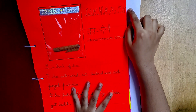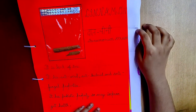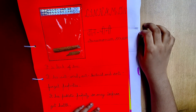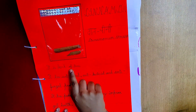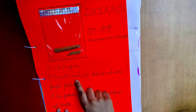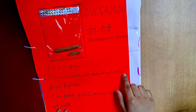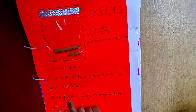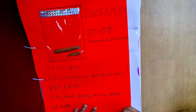First is cinnamon. This is also known as dalcini. Its scientific name is Cinnamomum. It is a bark of a tree. It has antiviral, antibacterial and antifungal properties. It has probiotic properties which may improve gut health.